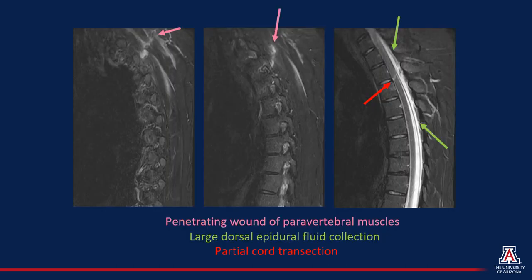Based on the CT findings, an MRI was recommended. The MRI images are shown here, with STIR images on screen left demonstrating a soft tissue stab wound extending to the level of the thoracic spine, indicated with the pink arrow. On screen right, there is additionally a large dorsal epidural fluid collection pointed out with a green arrow, as well as a partial cord transection pointed out with the red arrow.